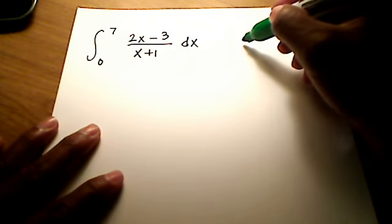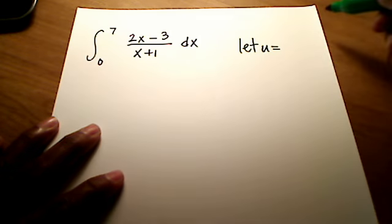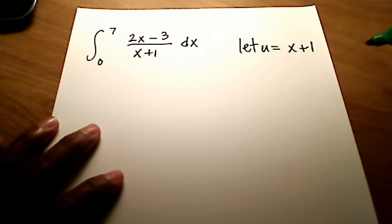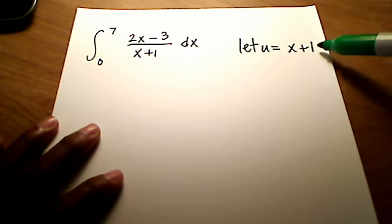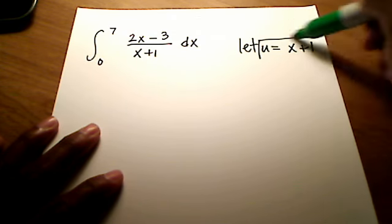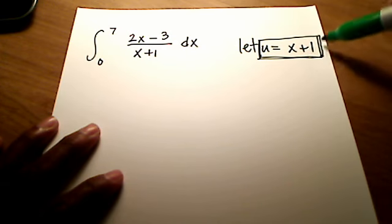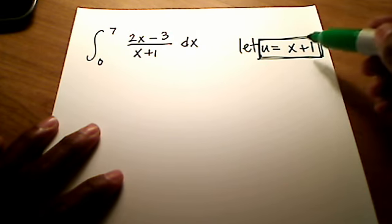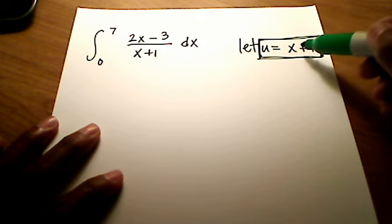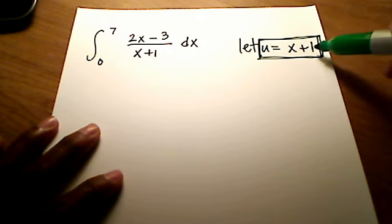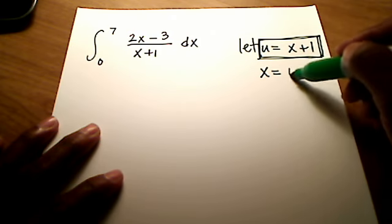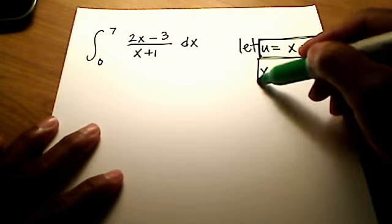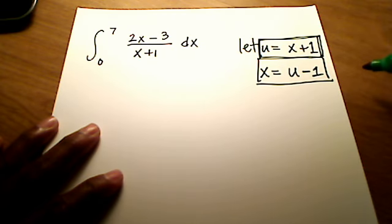In this problem, let's let u equal our entire denominator of x plus 1. And before I take the derivative, let me show you one more thing. We have u equal to x plus 1. What is x? If I subtract 1 from both sides, I can write x is equal to u minus 1. Keep these two things in mind — we're going to need them in just a second.